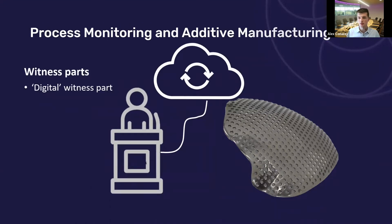This led us to the idea of a digital witness part. Could we use sensors within the machine to track performance stability over time, both during a single print and over the lifetime of a machine? By gathering data and modelling it in the right way, could we build up a digital model of our process using readily available sensors and link that back to part characteristics? To develop this idea, first we had to establish what factors to pay attention to and look for links between them and key quality metrics.